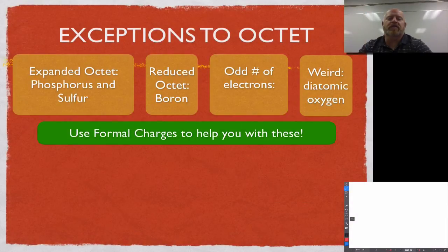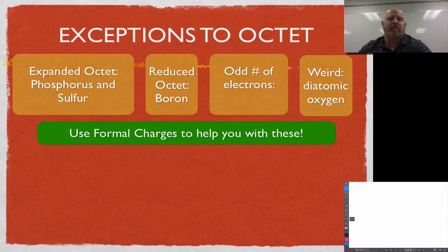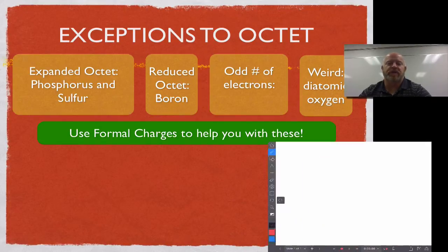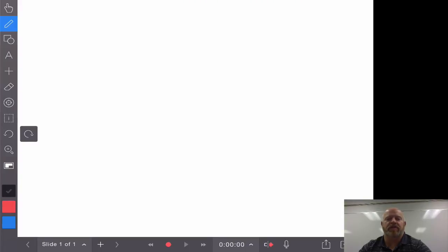In this video we're going to take a look at the exceptions to the octet rule, starting with phosphorus and sulfur. Phosphorus and sulfur have the ability to expand their octet, actually going above the magic number of 8, by utilizing an empty d orbital that's available for them to put electrons into.